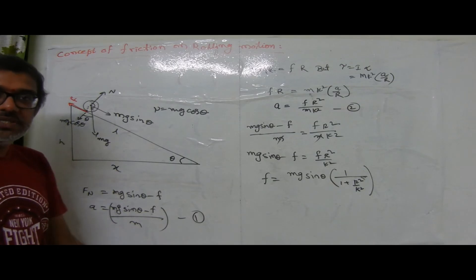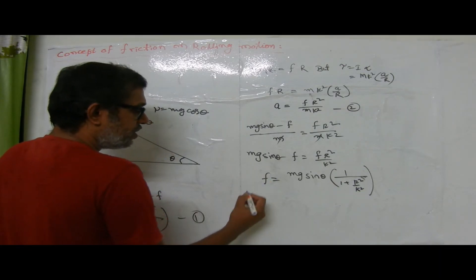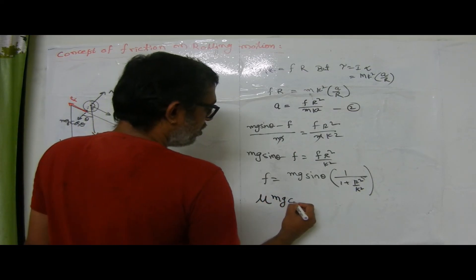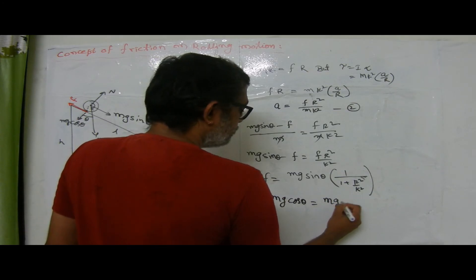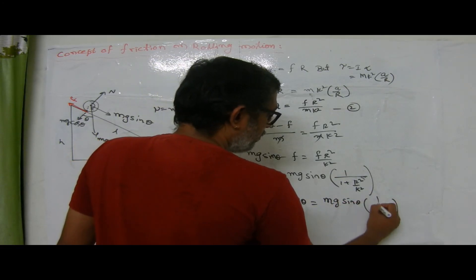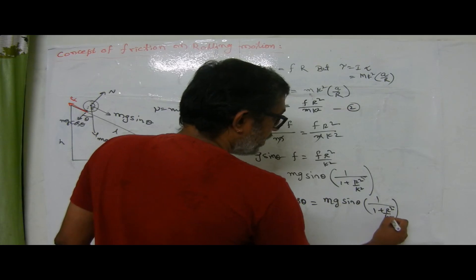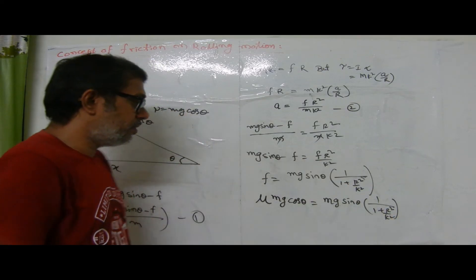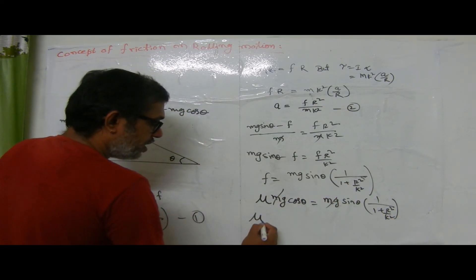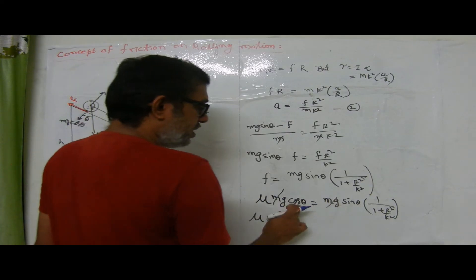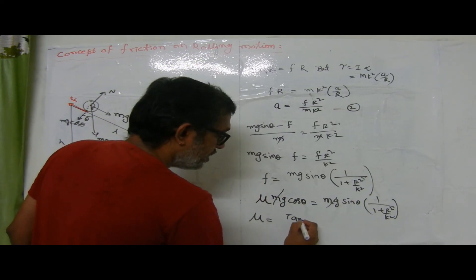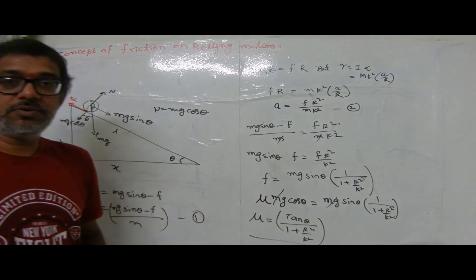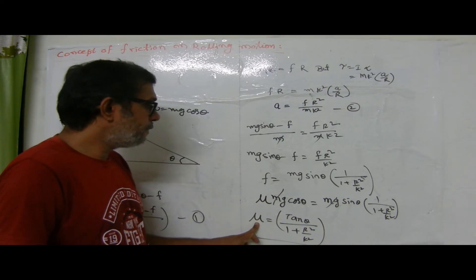To find the coefficient of friction, friction force equals mu times normal reaction (mg·cos θ). Setting this equal to mg·sin θ divided by (1 + r²/k²), the mg cancels. Rearranging, the coefficient of friction mu equals tan θ divided by (1 + r²/k²). This is the final answer for the minimum coefficient of friction required for rolling without slipping.